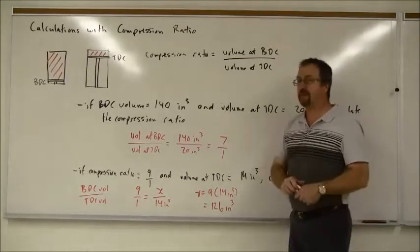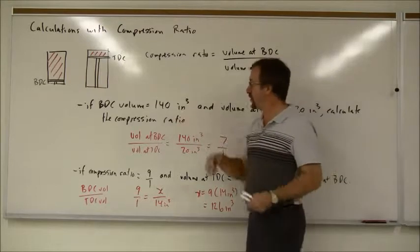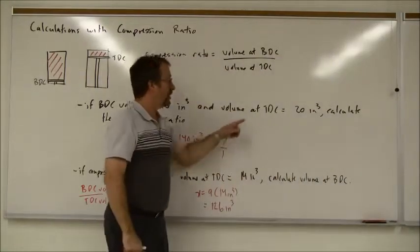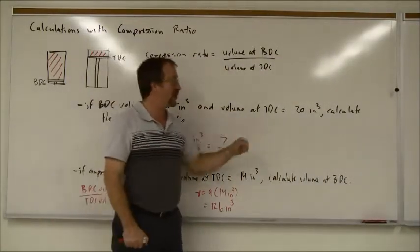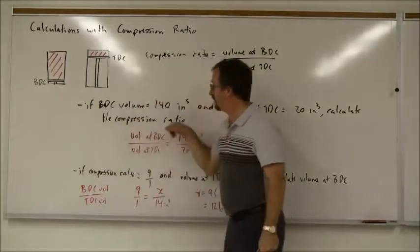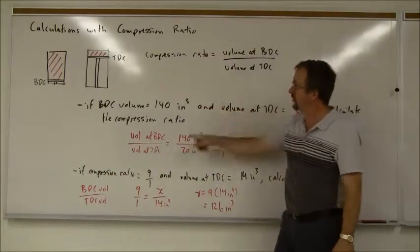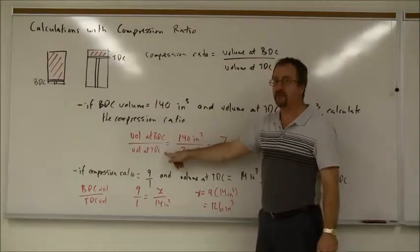In class, the example was if the bottom dead center volume is 140 cubic inches and the top dead center volume is 20 cubic inches, then you need to calculate the compression ratio.